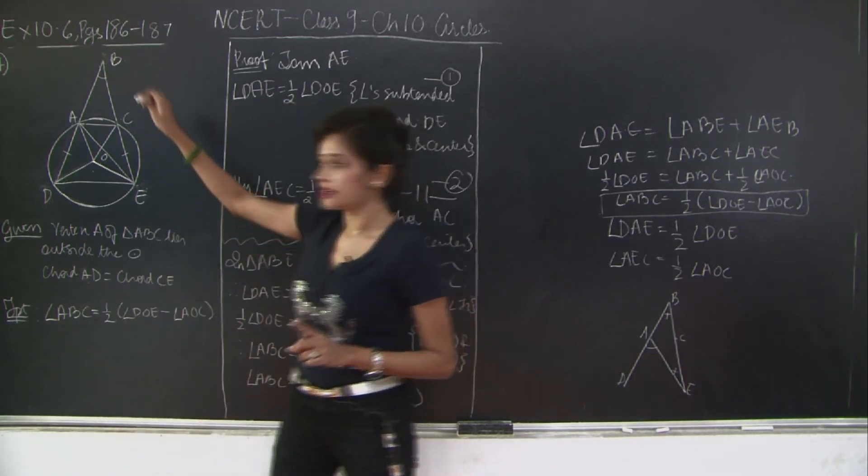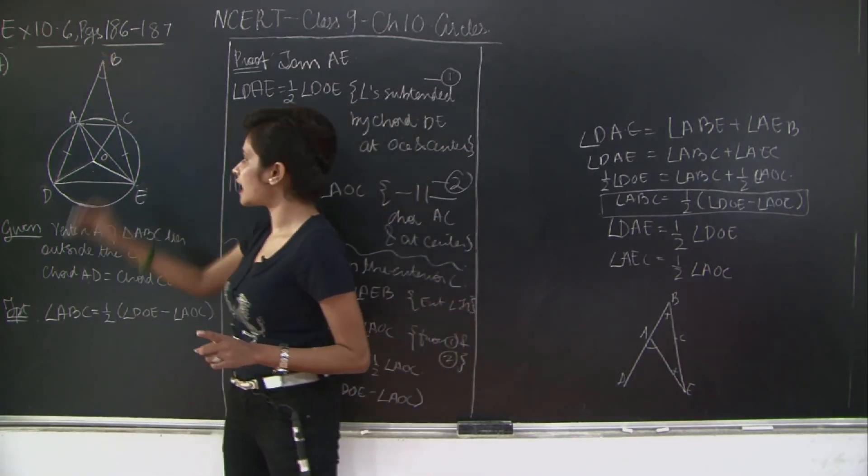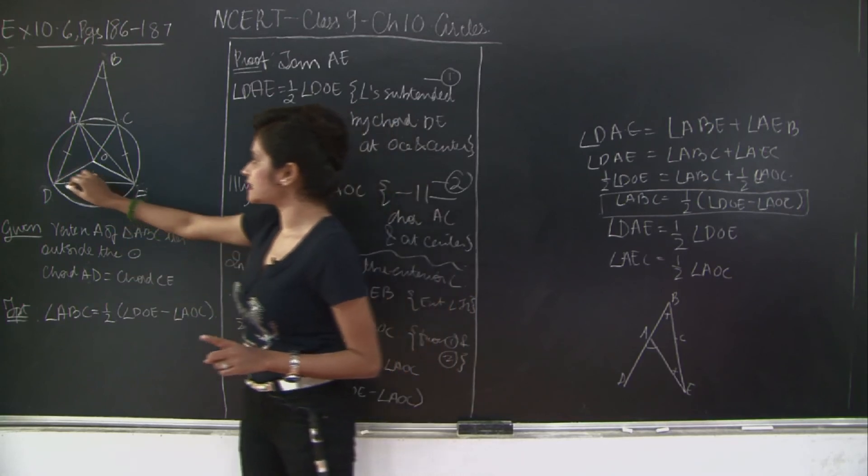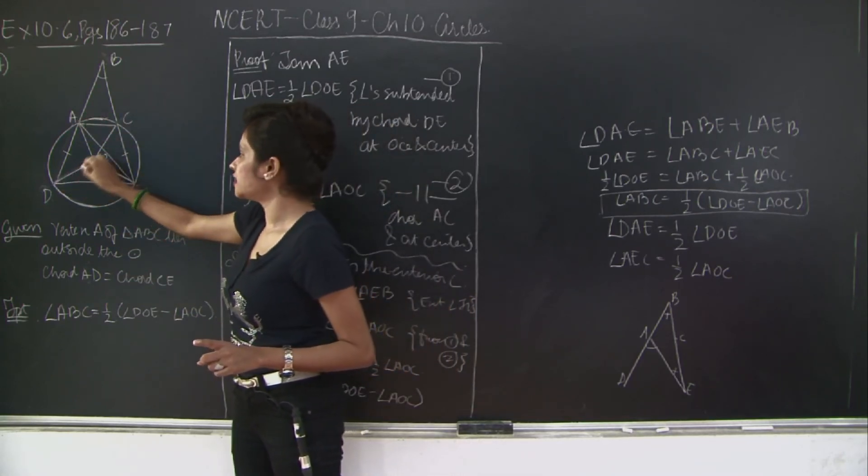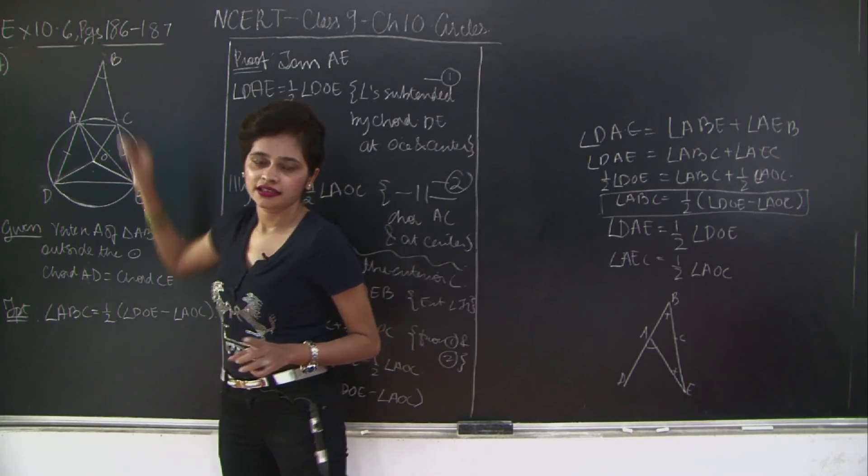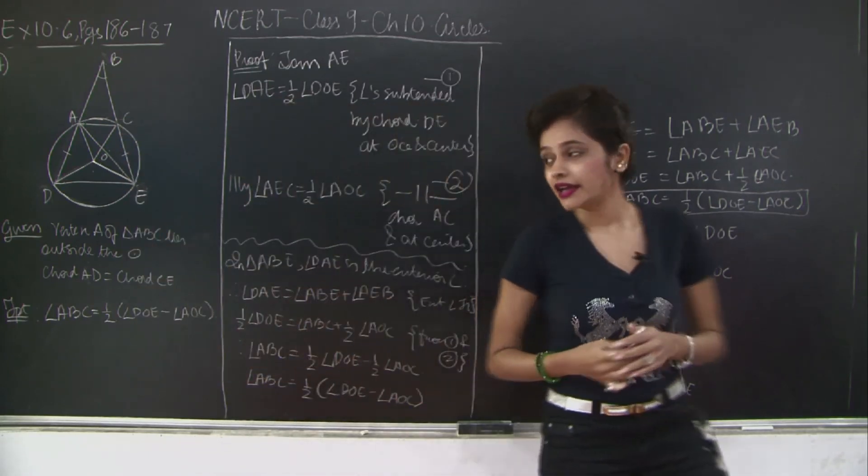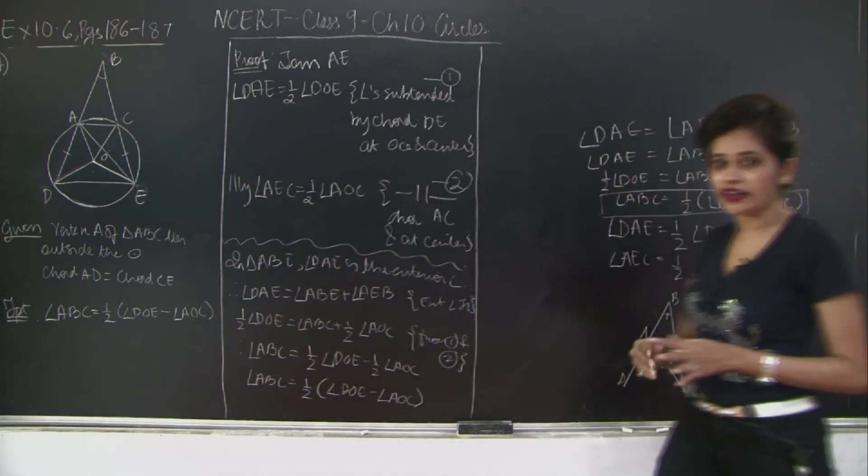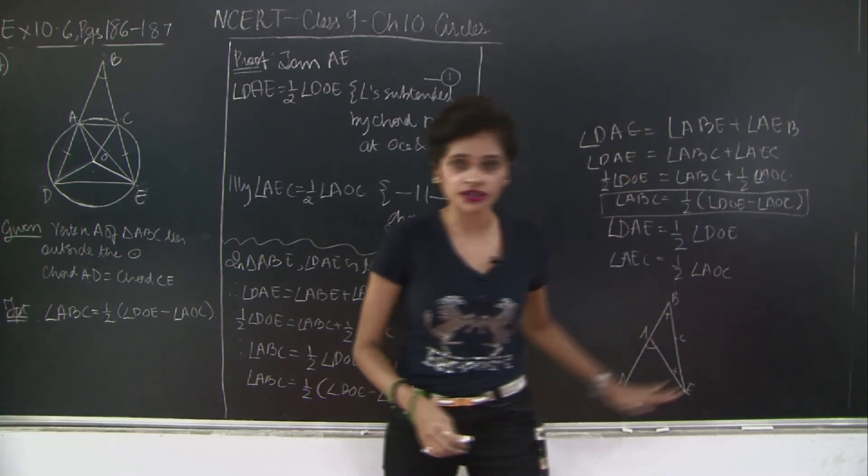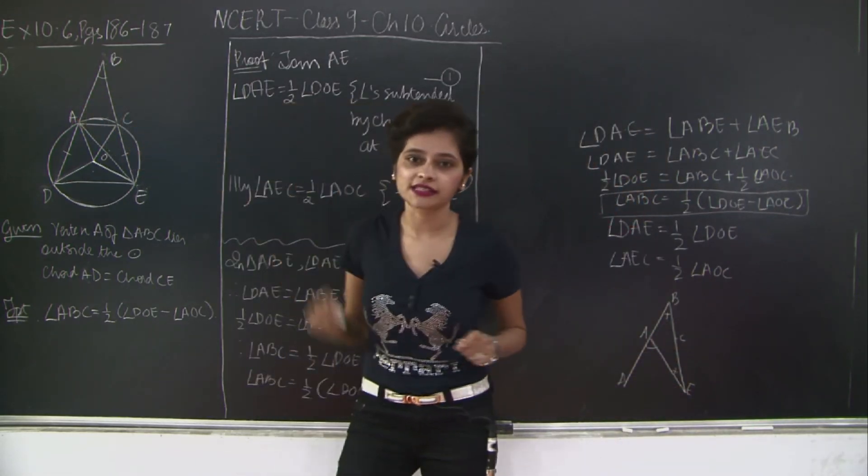So what is this angle? This angle is half the difference of angles subtended by chords DE and AC at the centres. Please take a look at the solution and make sure you take down these notes as well, especially this triangle out here. And mark this even in your textbooks.